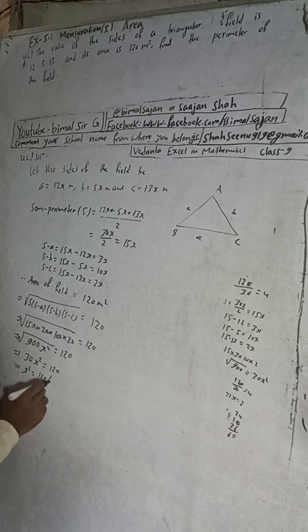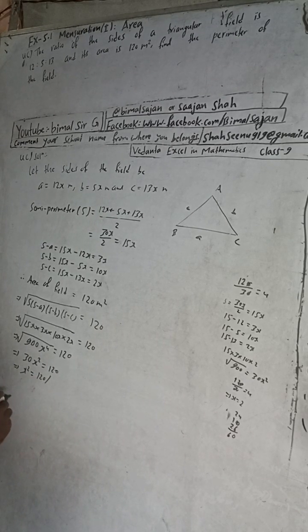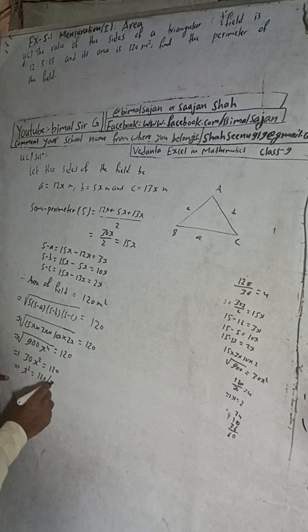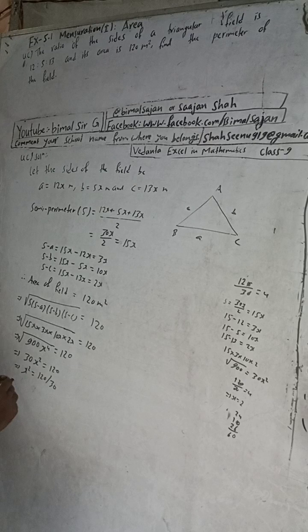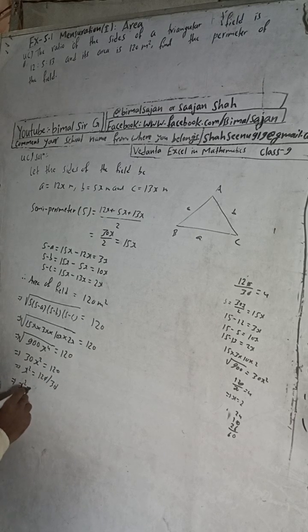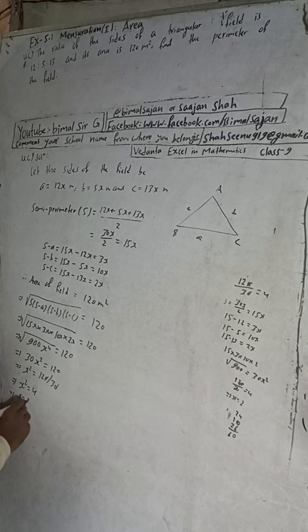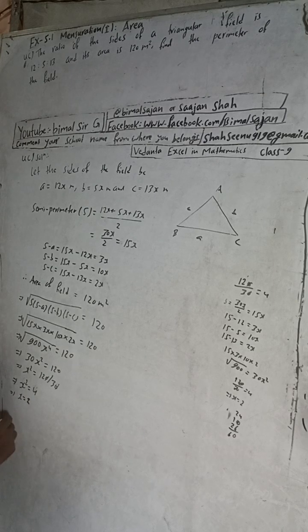So 30x² = 120, which gives x² = 120 / 30 = 4. Therefore x = 2.